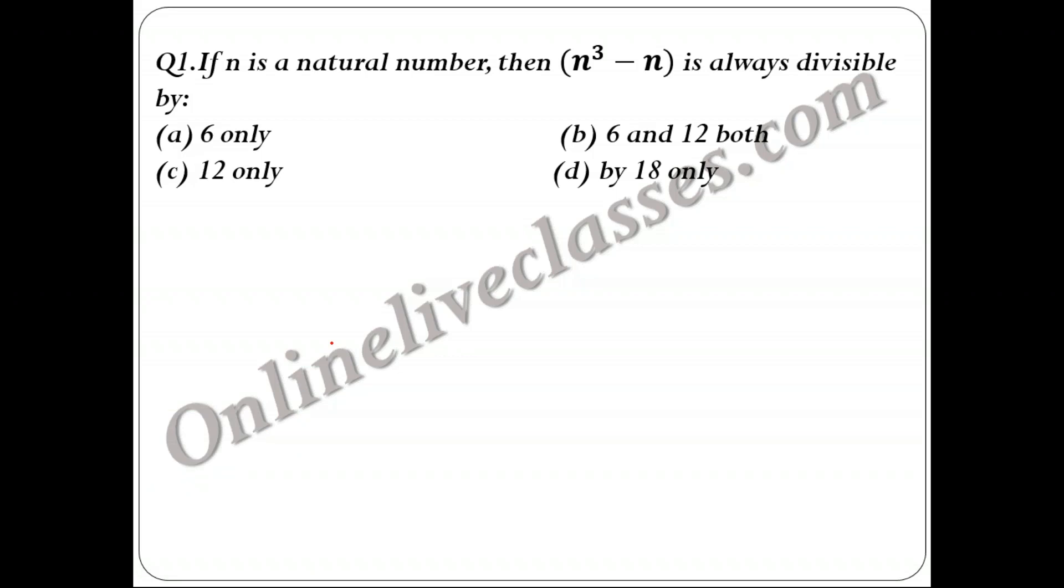For these types of questions, we always recommend that you put a value. When putting values, keep in mind don't put some very tough value. Try to put a value that is neither too big nor too small. Let us say I randomly put n = 5. So basically 5³ - 5 would be 125 - 5, so the value is 120.